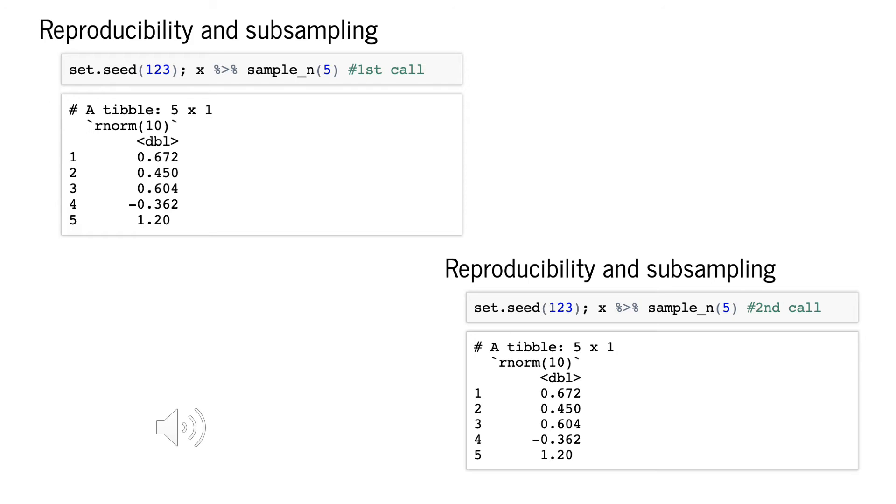We see now that in two different calls to the function sample_n, we draw the same 5 random numbers from the original list of 10.